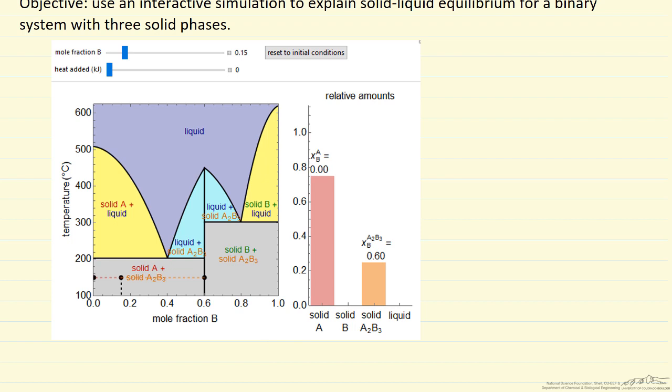In this case, what we're looking at is this point here, and this is composed of pure component A and this stoichiometric compound A2B3. The bar graph shows how much of each is present. If we have a total of one mole, we use the lever rule to determine these amounts.